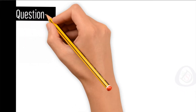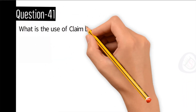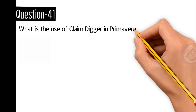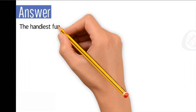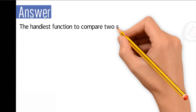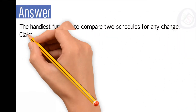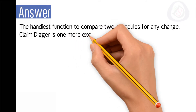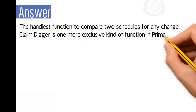Question number 41: What is the use of Claim Digger in Primavera P6? The handiest function to compare two schedules for any change, Claim Digger is one more exclusive kind of function in Primavera P6.